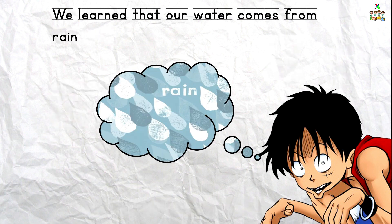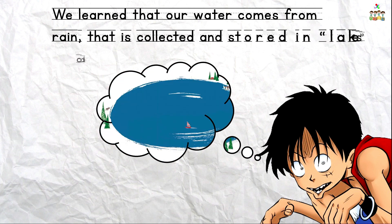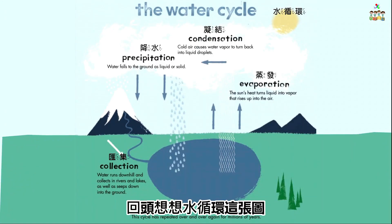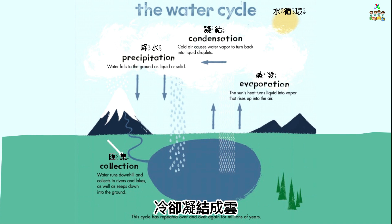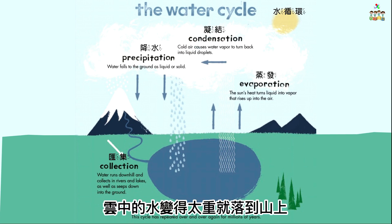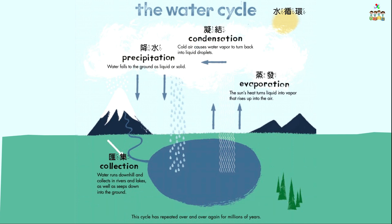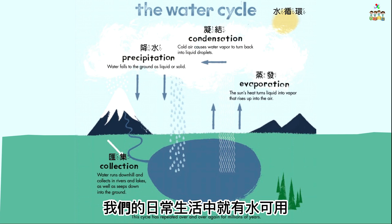We learned that our water comes from rain that is collected and stored in lakes called reservoirs. Think back at the water cycle. Water evaporates into the air, it cools down and condenses into clouds, the water in the clouds becomes heavy and falls down on the mountains, and finally the water flows down the river and is collected in the lake. As long as there is water in the lake, we have water to use in our daily lives.